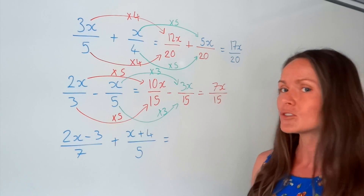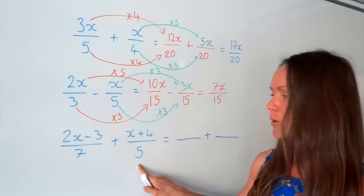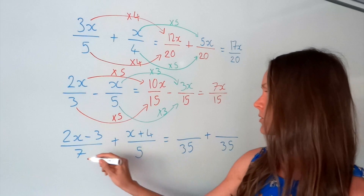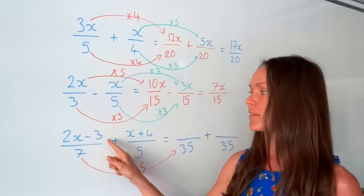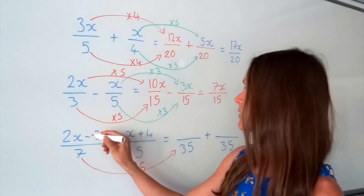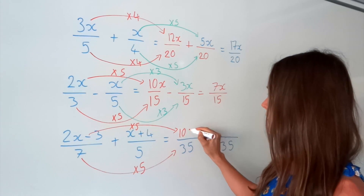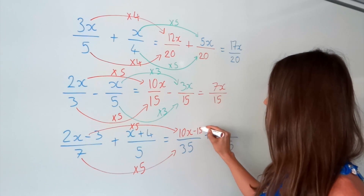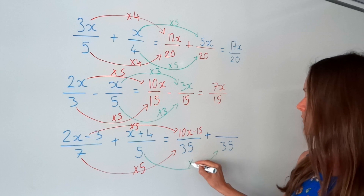On to the last one — for now. Again, the lowest common multiple — the smallest number that both 7 and 5 fit into — is 35. So do that bit first. To get from 7 to 35, I must multiply by 5. So I have to do the same with all of this — I have to multiply this entire numerator by 5. So here we only had one term, but now we've got two things we have to multiply by 5. If I multiply 2x by 5 I get 10x. And if I multiply negative 3 by 5, I get negative 15. For the second fraction, to get from 5 to 35, I must multiply by 7.